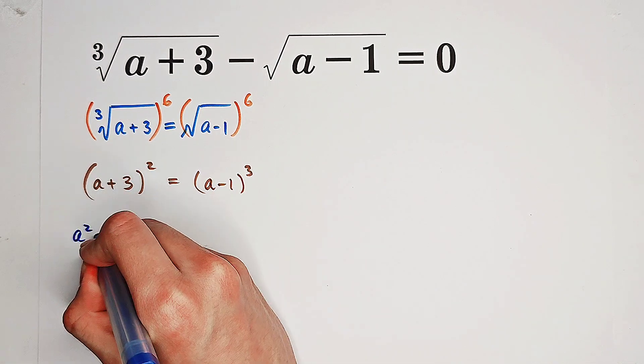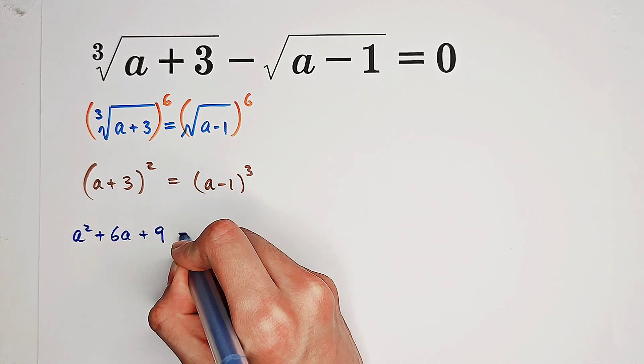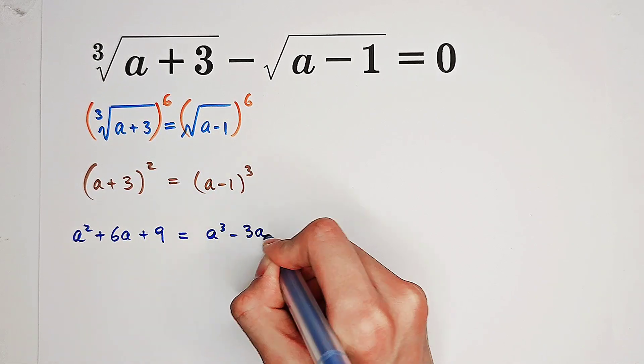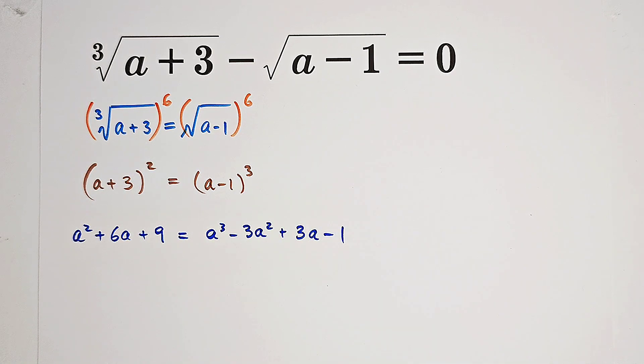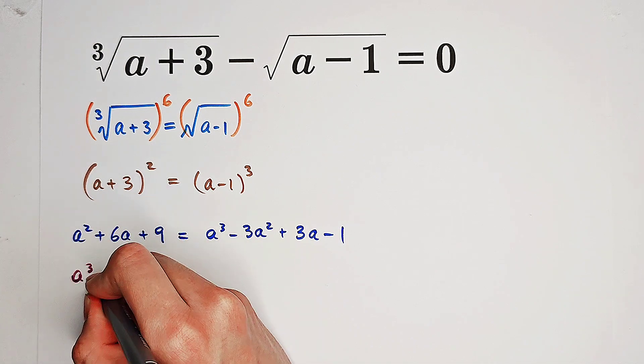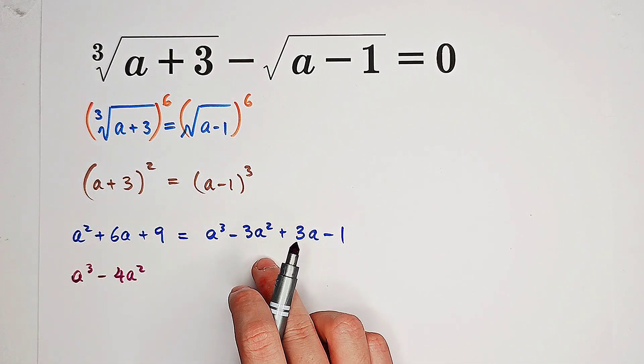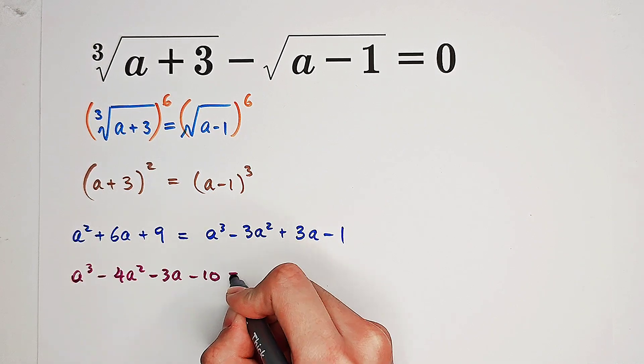Now you can see on the right side we have a plus 3 squared equals a minus 1 cubed. Now we have a squared plus 6a plus 9 equals a cubed minus 3a squared plus 3a minus 1.